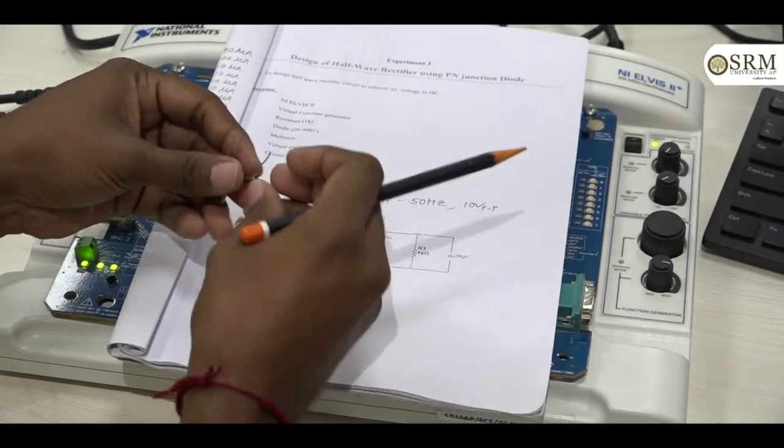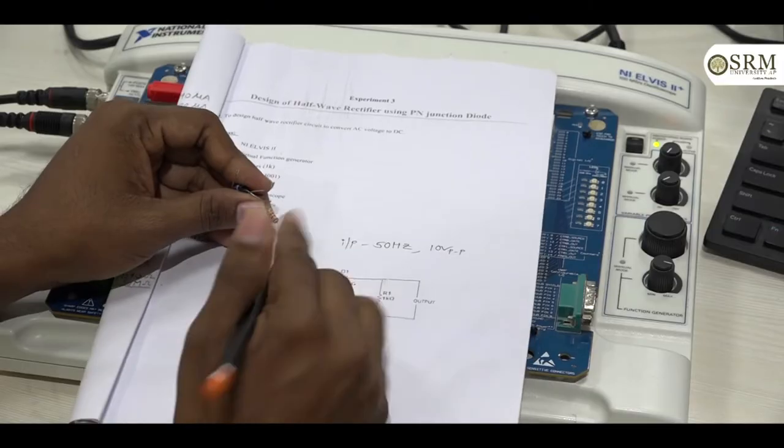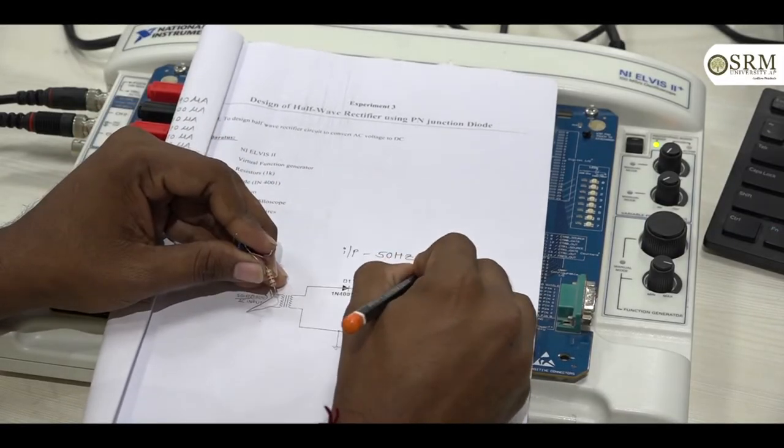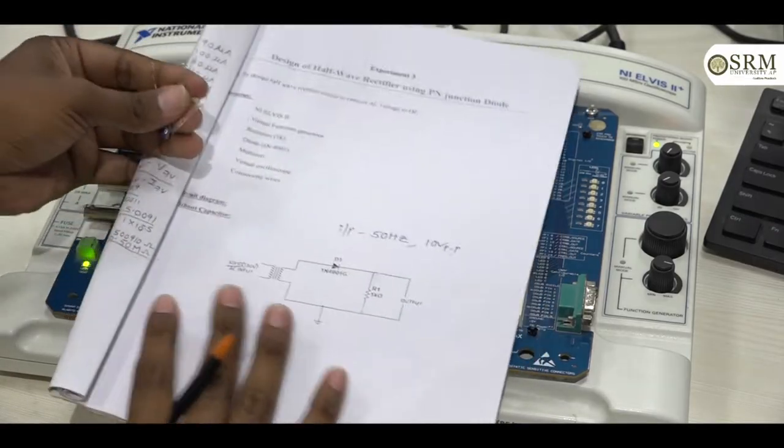Coming to the circuit diagram, here we have transformer. This is replaced by function generator giving 50 Hz frequency and 10 volts peak to peak coming to the circuit diagram.